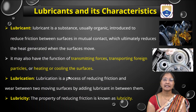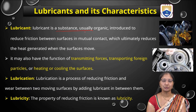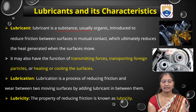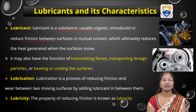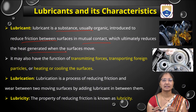First, what is a lubricant? A lubricant is a substance — it is usually made of organic material, meaning it mostly contains carbon and hydrogen. It is introduced to reduce friction between two surfaces in mutual contact, which ultimately reduces the heat generated when the surfaces move.